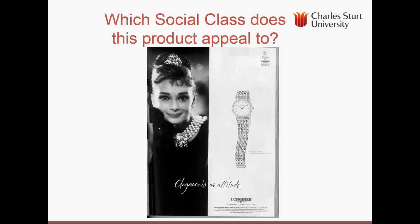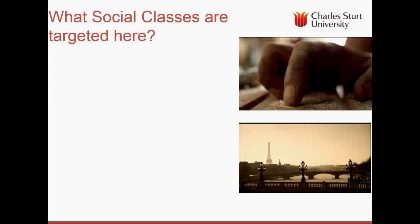So which social class does a given product appeal to? An advertisement emphasising 'elegance and attitude' would appeal to the upper social classes rather than the nouveau riche, because the product displays elegance and conservatism rather than trying to impress a large number of people. We'll look at two advertisements and consider which kinds of social classes they're targeting.